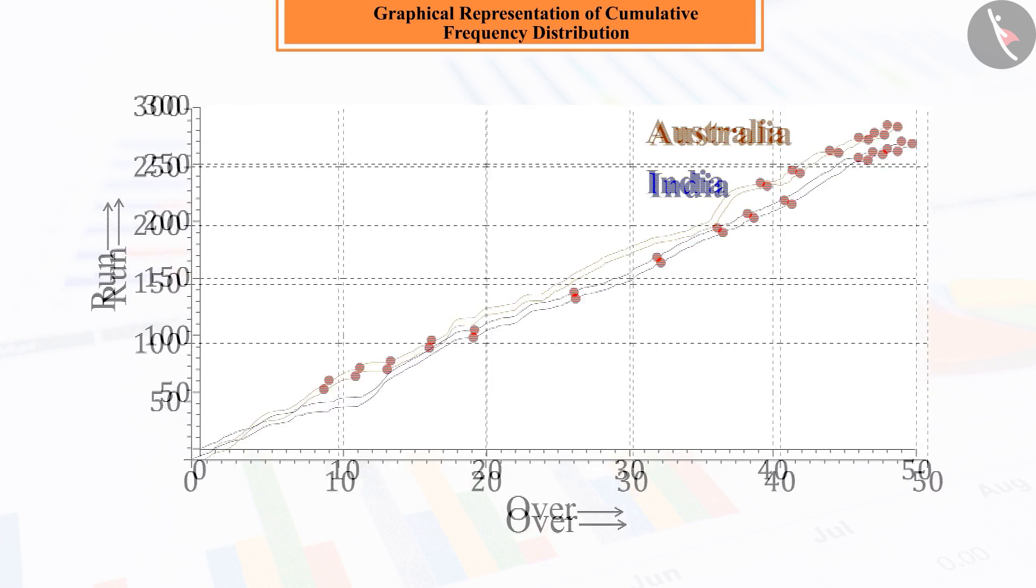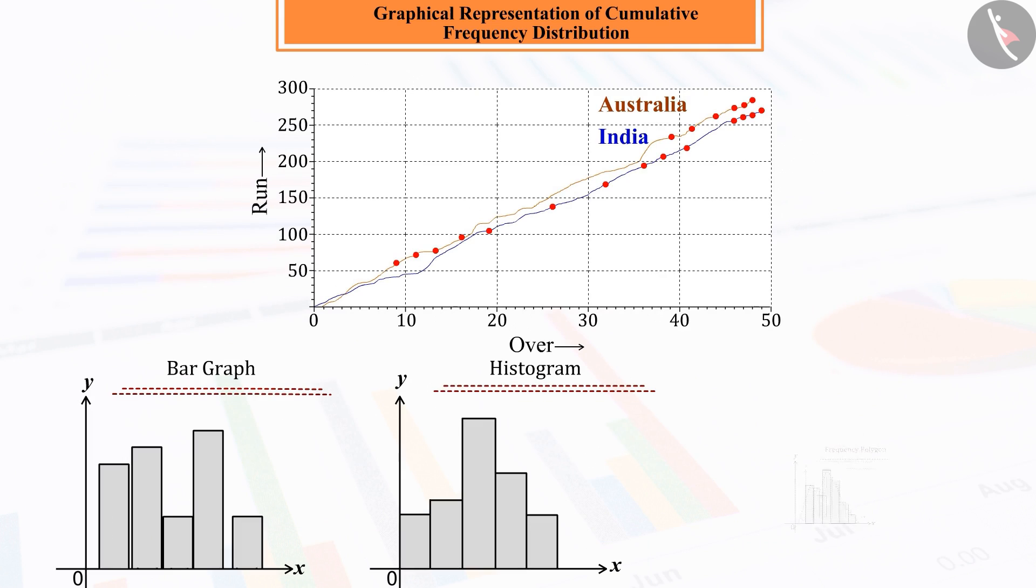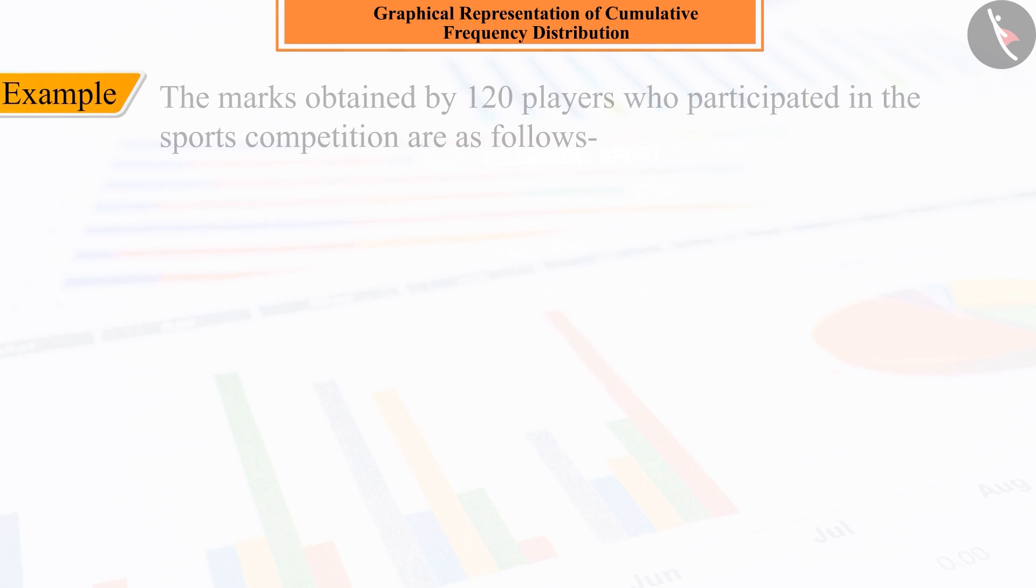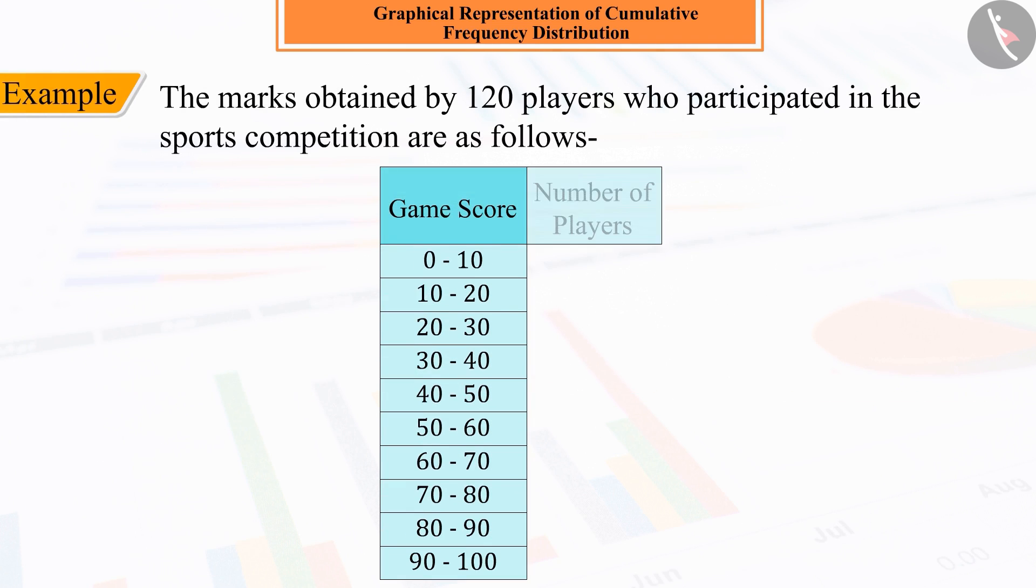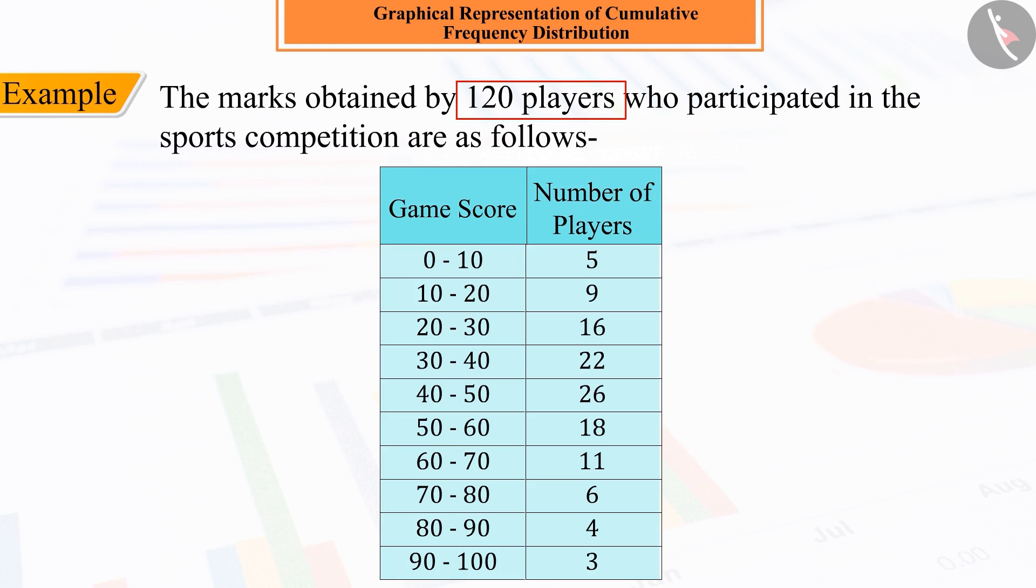Using this concept, we have learnt to draw graphs from the frequency distribution table in the previous class. So let's discuss it. On the basis of grouped data, we can see that the marks obtained by the 120 players who participated in the sports competition is represented as follows.